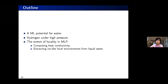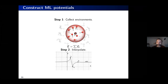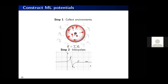The machine learning potential also correctly captures the ground state crystal structure at different pressures. Solid hydrogen is known to be very complicated, forming many polymorphs at low temperature and different pressures, and the melting line also looks consistent with previous experimental measurements. Are there any questions?